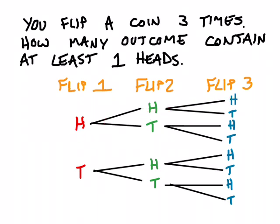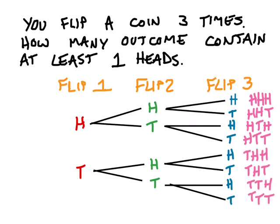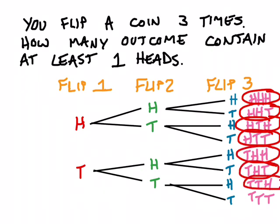I can see what each of those eight combinations are: heads-heads-heads, heads-heads-tails, heads-tails-heads, heads-tails-tails, and so on. Now I can easily answer the question: how many outcomes contain at least one heads? I can circle the ones that fit — there are seven of them. There's only one combination that doesn't contain at least one heads, and that's tails-tails-tails. So the probability of getting at least one heads when flipping a coin three times is seven out of eight, and my tree diagram really helps me see that.